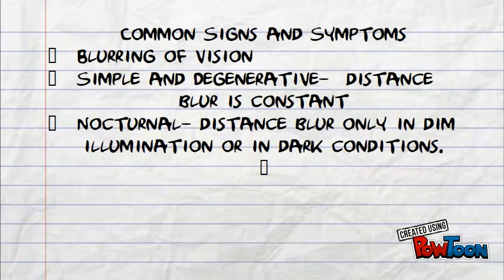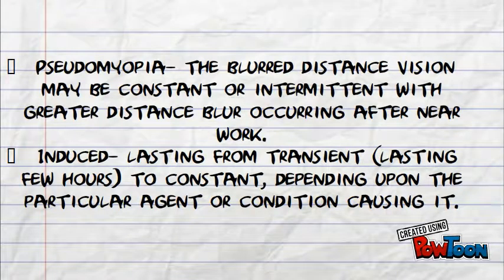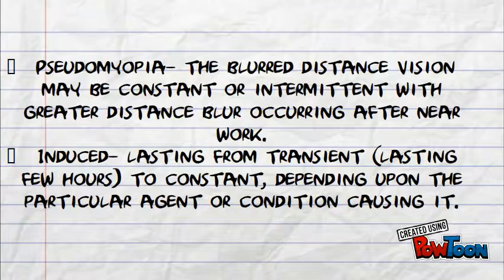The common signs and symptoms would be blurring of vision. In simple degenerative myopia, distant blur is constant. Nocturnal distance blur occurs in dim illumination or dark conditions. In induced myopia, blurred distance vision may be transient — lasting from a few minutes to a few hours — to constant, depending on the particular agent or condition causing it.